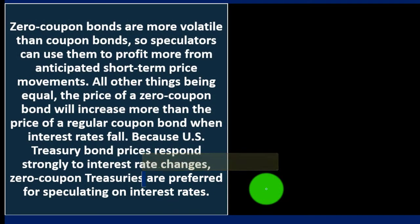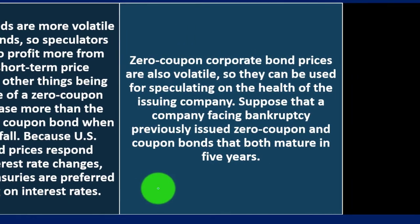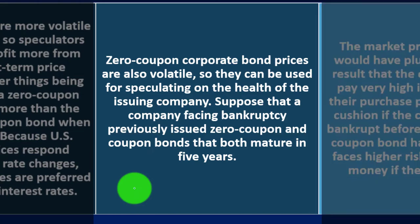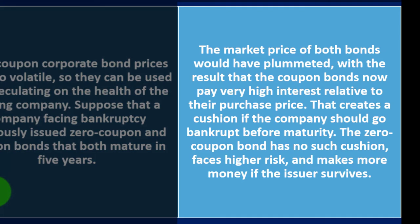All other things being equal, the price of a zero coupon bond will increase more than the price of a regular coupon bond when interest rates fall. Because U.S. Treasury bond prices respond strongly to interest rate changes, zero coupon Treasuries are preferred for speculating on interest rates. Zero coupon corporate bond prices are also volatile and can be used for speculating on the health of the issuing company. Suppose a company facing bankruptcy previously issued both zero coupon bonds and coupon bonds maturing in five years. The market price of both bonds would have plummeted, with the coupon bonds now paying very high interest relative to their purchase price — creating a cushion if the company goes bankrupt before maturity. The zero coupon bond has no such cushion, faces higher risk, but makes more money if the issuer survives.